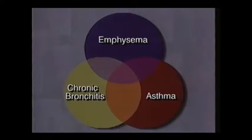Chronic obstructive pulmonary disease is a group of overlapping respiratory conditions, which may include emphysema, chronic bronchitis, and asthma.